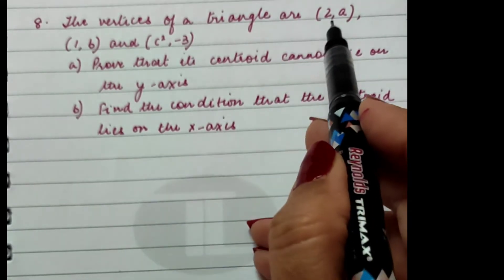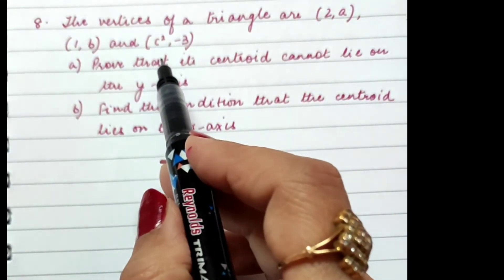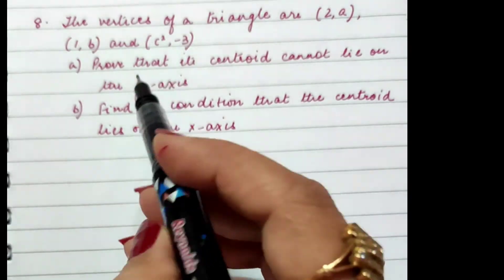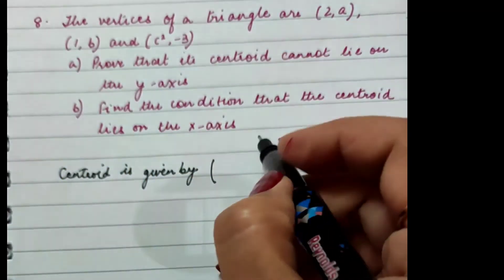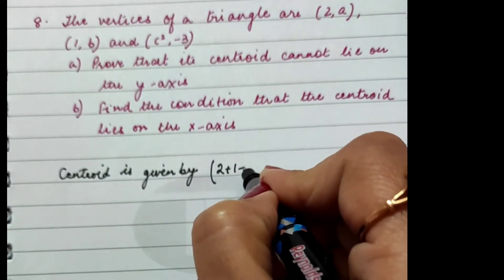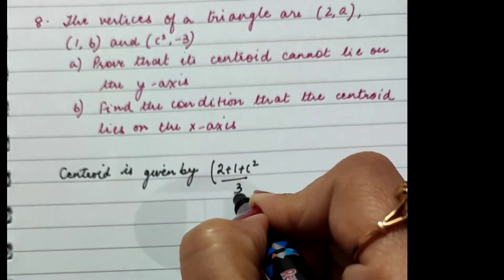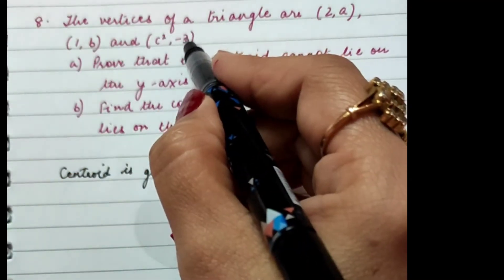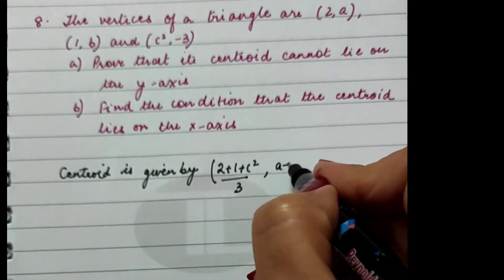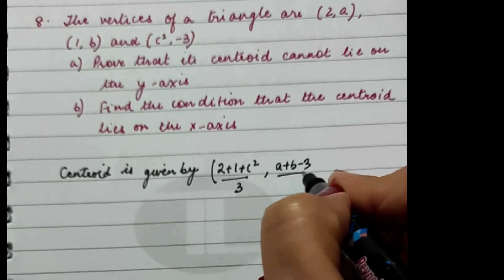Using that for this triangle, what will the centroid be? The centroid will be given by (2 + 1 + c²)/3 and (a + b - 3)/3.